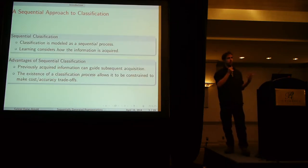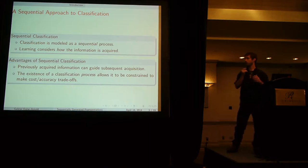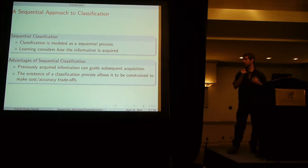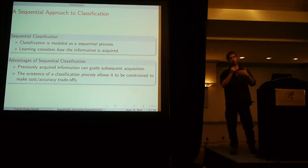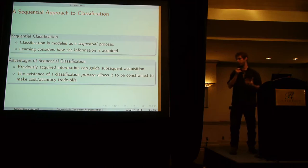This is part of a bigger framework that we've worked on in my thesis that we call sequential classification where we model classification as a sequential process. The goal here is that not only do we learn how to classify, we also learn how to acquire the information necessary to classify. As we acquire the information we can leverage all this additional information so that our acquisition task gets better and better because we have more and more context.